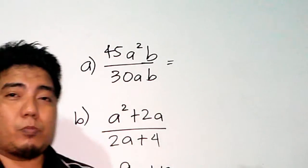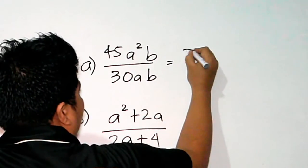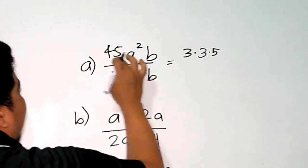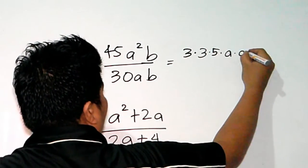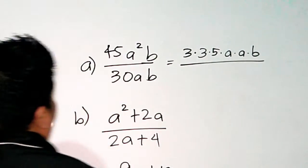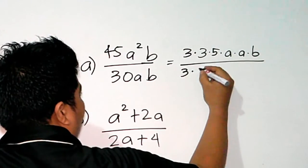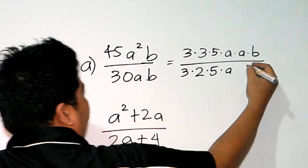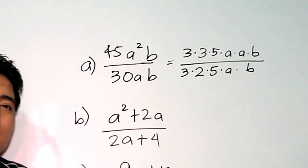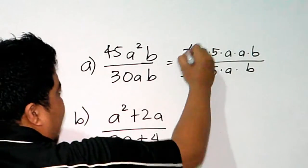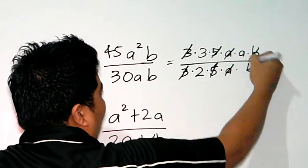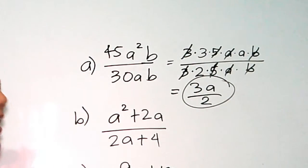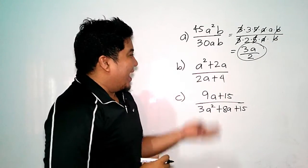Let's start with the first example. We have 45a²b over 30ab. Breaking down the numerator using prime factorization: 45 = 3 × 3 × 5, a² = a × a, and b = b. For 30ab: 30 = 3 × 2 × 5, a = a, b = b. Cancelling common factors gives us a final answer of 3a over 2.